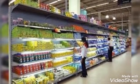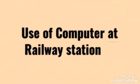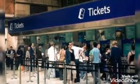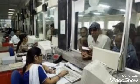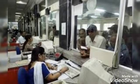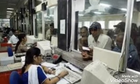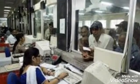These are the places where we use computers. What is the use of computers at the railway station? Computers are used for booking tickets. Traveler details are stored in computers, and train timings are also stored in computers. This information is used to help travelers.